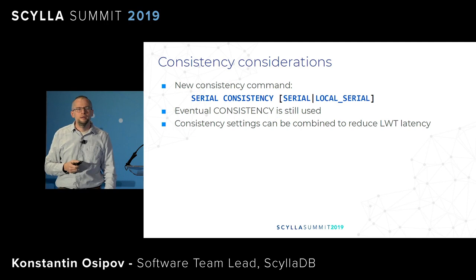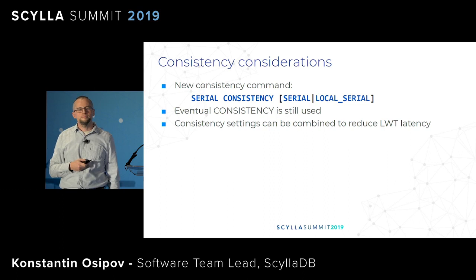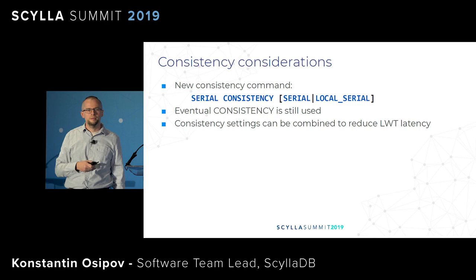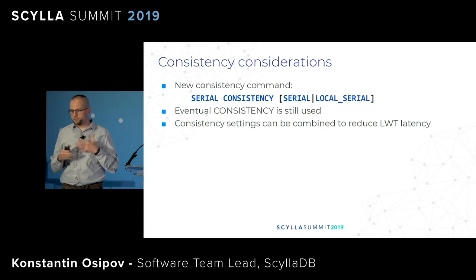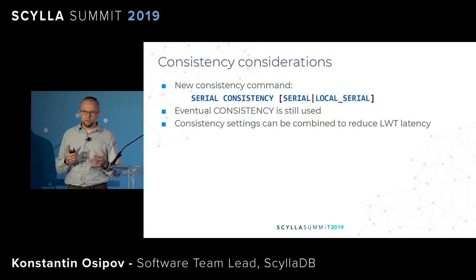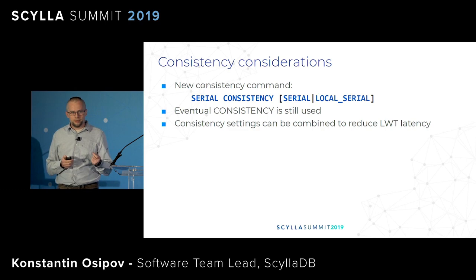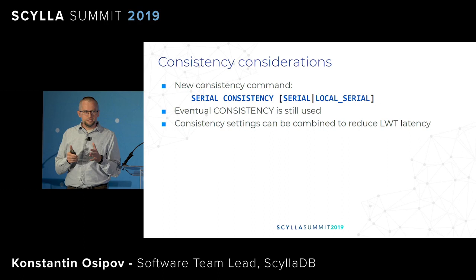A question came up: the batch conditions have a single view of the data — but what is the 'latest view' given we're talking about eventual consistency? Lightweight transactions are in a bit of their own world — they add their own consistency statement. In CQL grammar there is a serial consistency and local serial, independent from other consistency levels. There are many consistency levels in Scylla like Quorum, All, Any — but lightweight transactions don't add new levels to those; they use serial consistency.